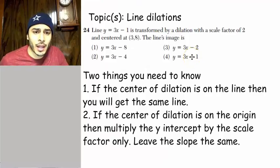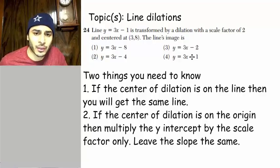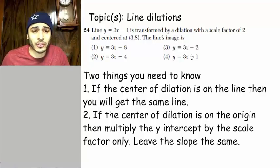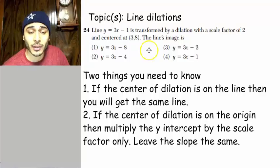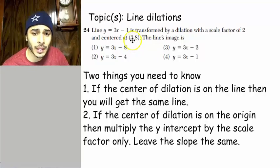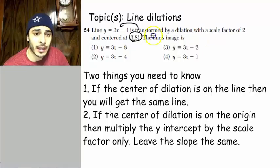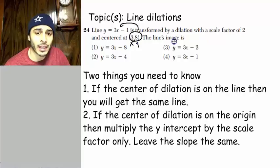All right, number 24. Line y equals 3x minus 1 is transformed by a dilation with a scale factor of 2 and centered at (3, 8). The line's image is. So, two things you need to know. If the center of dilation is on the line, then you will get the same line. So, let's take a look here. Is (3, 8) on this line? Well, let's see. If x is equal to 3, does y equal 8?